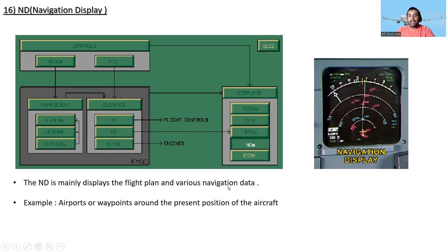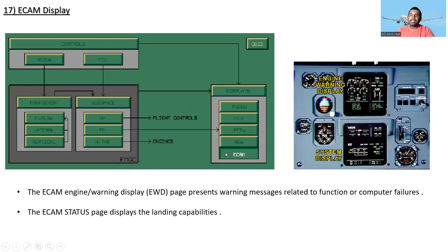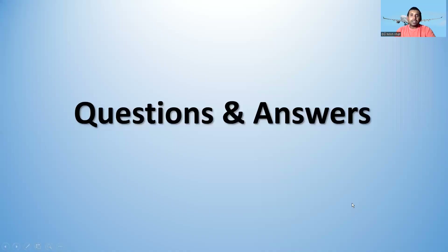The Navigation Display mainly displays the flight plan and various navigation information — for example, airports or waypoints around the present position of the aircraft. The ECAM Engine Warning Display (EWD) page presents warning messages related to computer failures, and the ECAM Status page displays the landing capabilities.